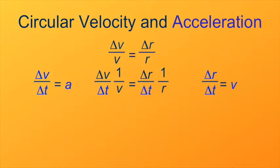So we can make those substitutions into the equation. Where we have delta v over delta t on the left, we'll plug in a. Where we have delta r over delta t on the right, we'll plug in v. So now a over v equals v over r. Multiply both sides by v. And here's what we get. Acceleration is v squared over r.